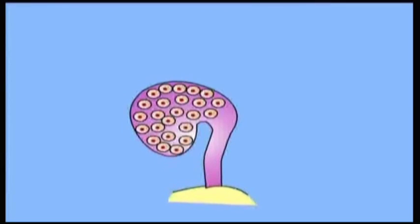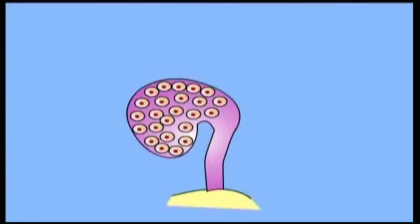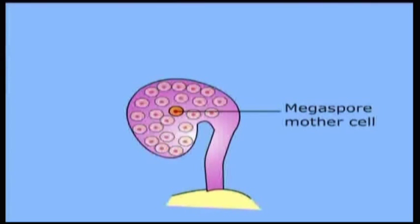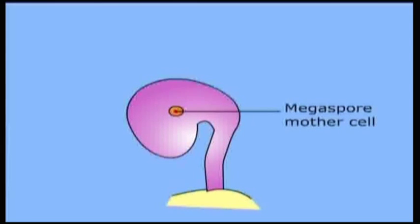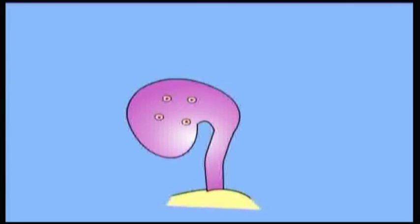From the cells of the nucellus, one cell differentiates as megaspore mother cell which is diploid i.e. 2N. The megaspore mother cell divides by meiosis to form four megaspores out of which only one develops as embryo sac.